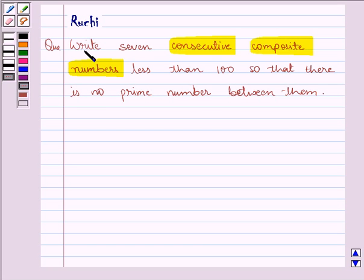The question says, write 7 consecutive composite numbers less than 100 so that there is no prime number between them.